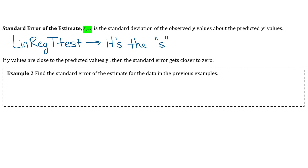For example 2, find the standard error of the estimate for the data in the previous example. Just pull up linear regression t-test again. In that same list, you'll see the lowercase s — it should say 6.055.